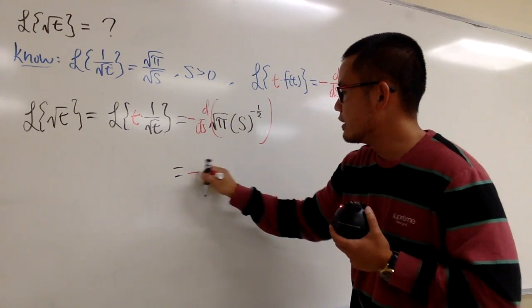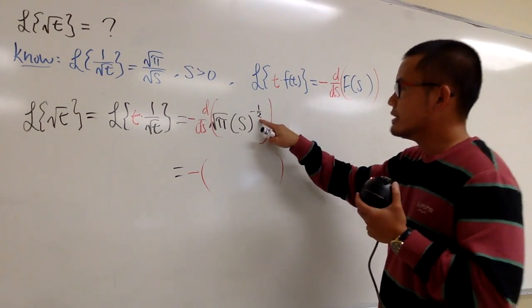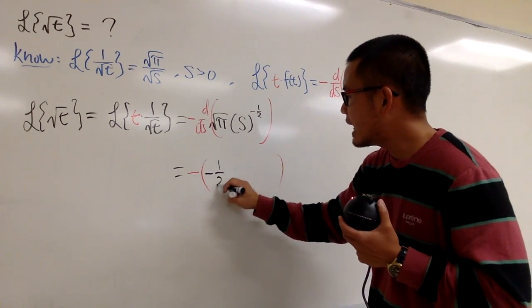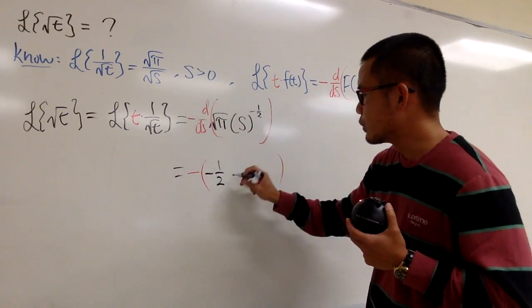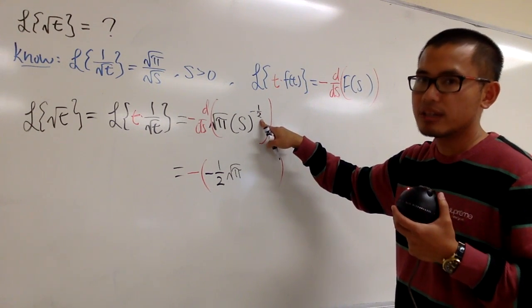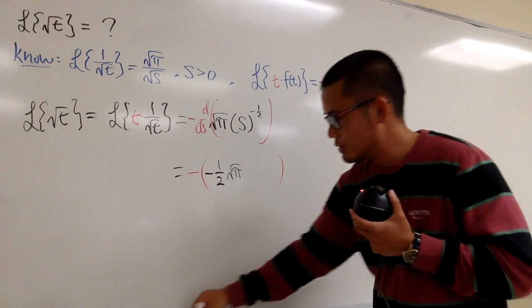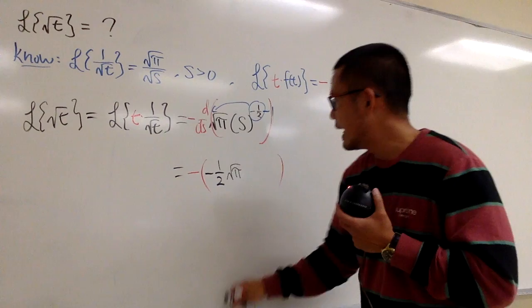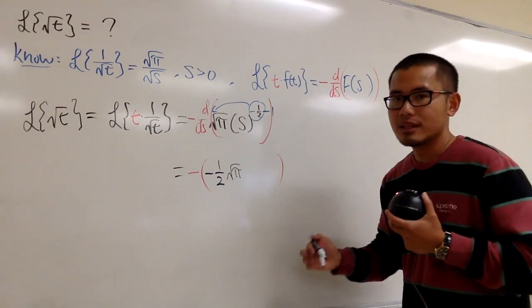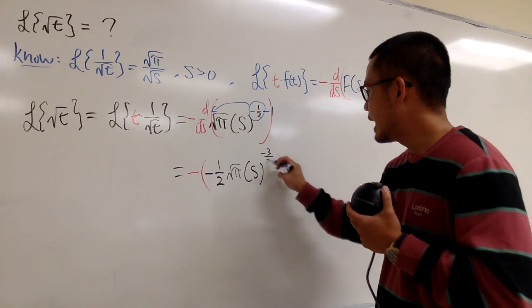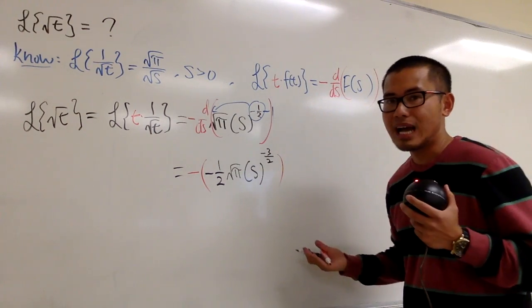And now, let's just get to work. Okay, so I have this negative in the front. Inside here, let me bring the negative 1 half to the front, so we have negative 1 half, and then this is just a constant, so we keep it, square root of pi, and of course don't forget to minus 1. Remember, you bring this to the front, and then minus 1. And negative 1 half minus 1 is s to the negative 3 half, and this is pretty much all we have.